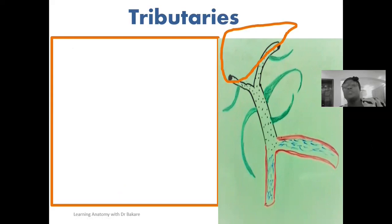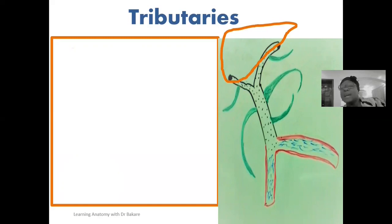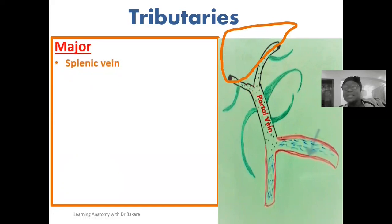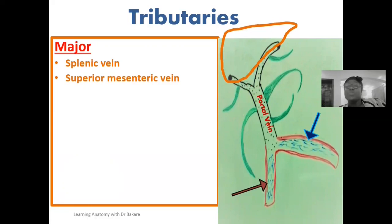Before going further, it's good for us to revisit the tributaries of the portal vein. The portal vein has two major tributaries: it is formed by the splenic vein and the superior mesenteric vein. These two veins unite to form the portal vein. The portal vein also receives minor tributaries from other veins around it.